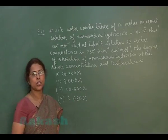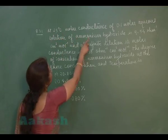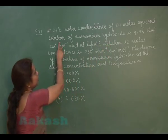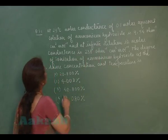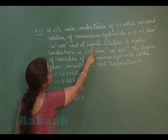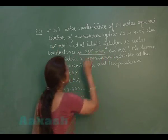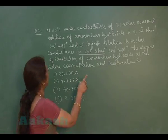Let us see question number 31. At 25 degree centigrade, molar conductance of 0.1 molar aqueous solution of ammonium hydroxide is 9.54 per ohm centimeter square per mole, and at infinite dilution its molar conductance is 238 per ohm centimeter square per mole.